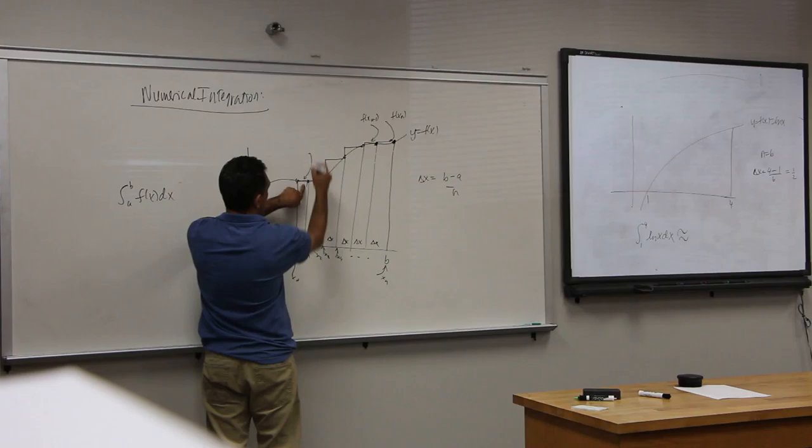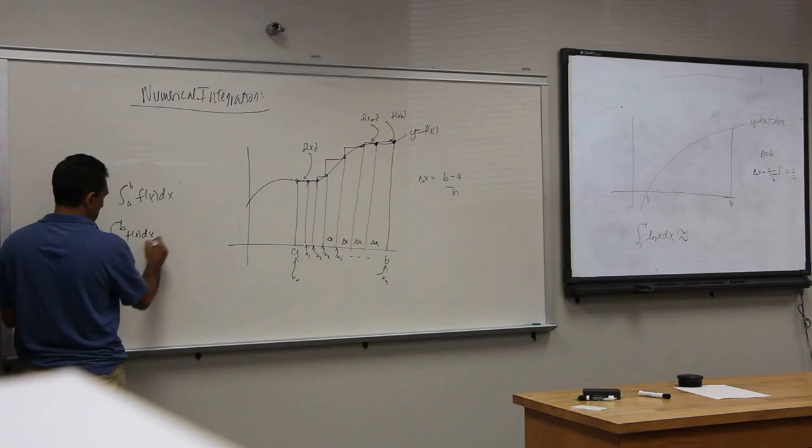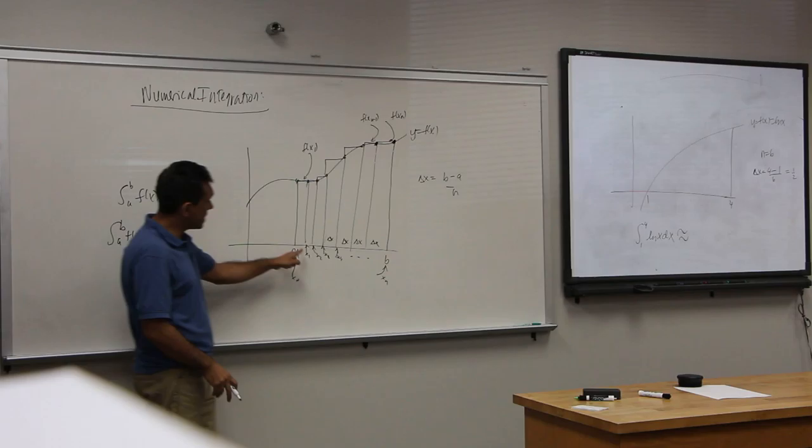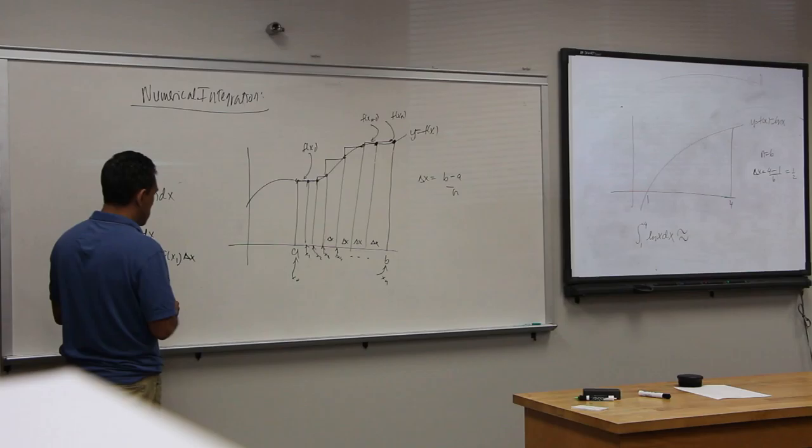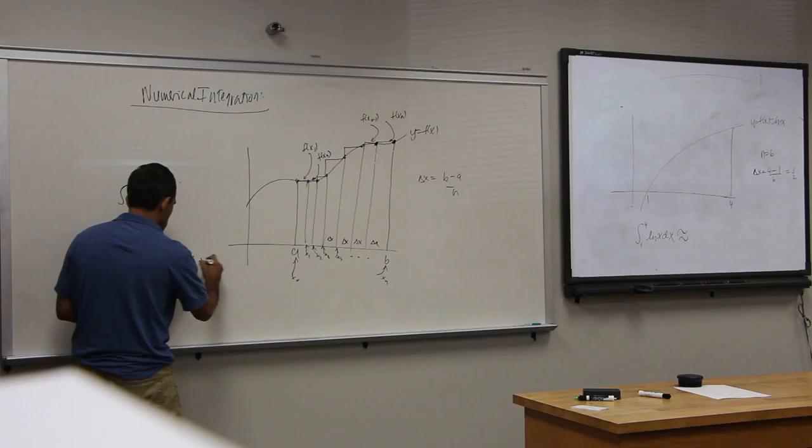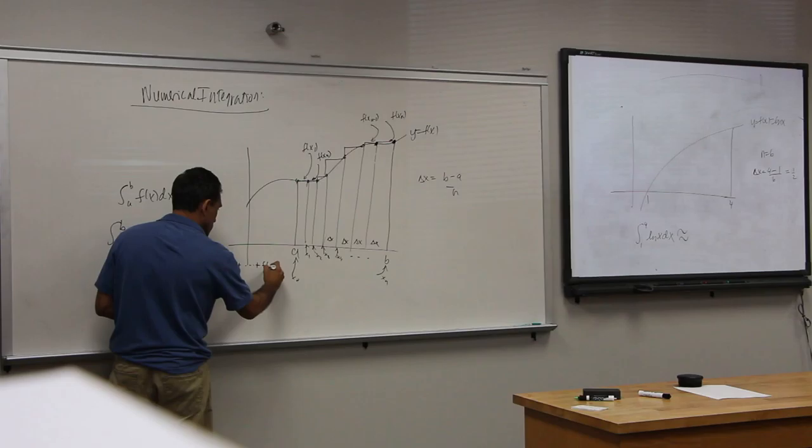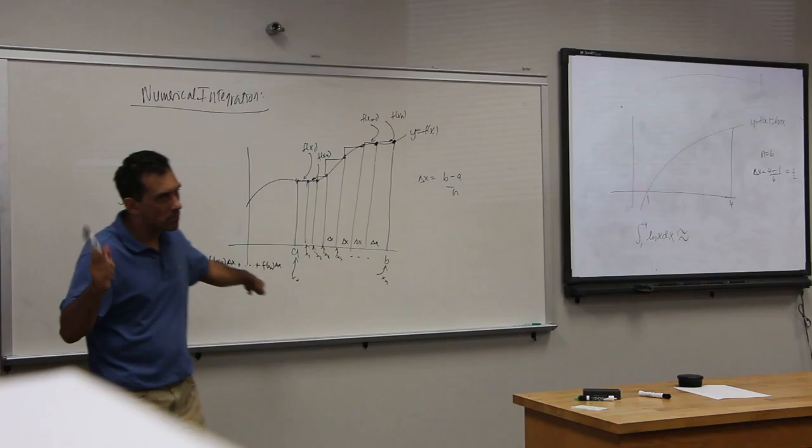So this, if you are using right Riemann sums, is approximate. The height here multiplied by the thickness. The height multiplied by the thickness. What is the height here? f of x2. Multiplied by the thickness. What is the height here? f of x2. Multiplied by the thickness.